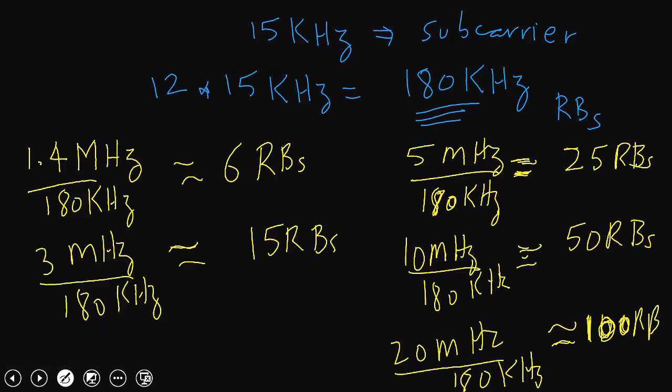So what about 15 megahertz? 15 megahertz will be in between 10 and 20 megahertz, so for 15 megahertz we will have approximately 75 resource blocks, or RBs.